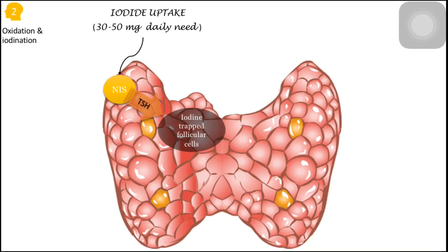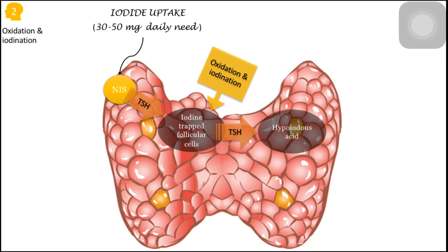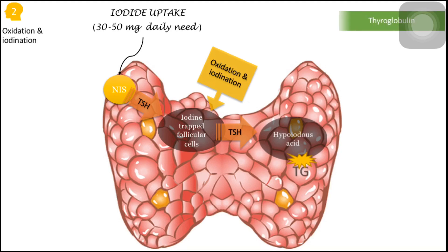The second step is oxidation and iodination of the trapped iodine present inside the follicular cells. After oxidation and iodination, it forms hypoiodous acid, and this process is also mediated by TSH. The formed hypoiodous acid then binds with thyroglobulin, a protein normally present in the thyroid gland. Due to this binding, it leads to the formation of monoiodothyronine and diiodothyronine.